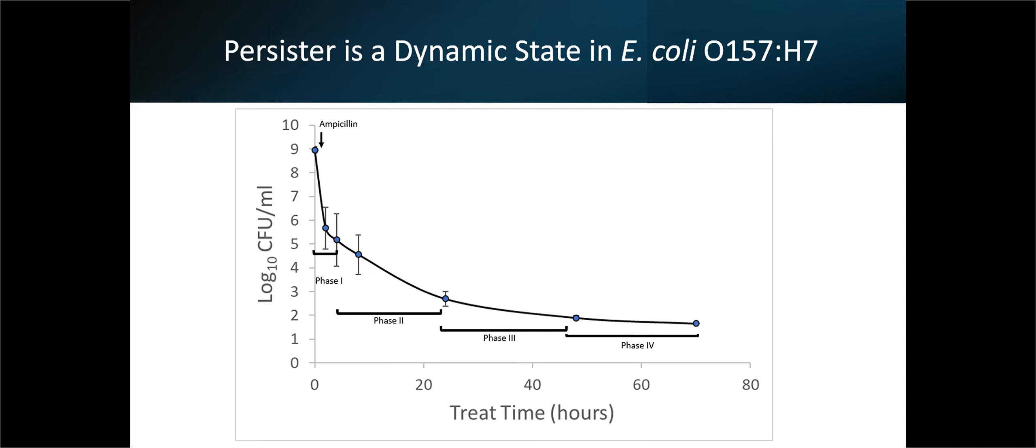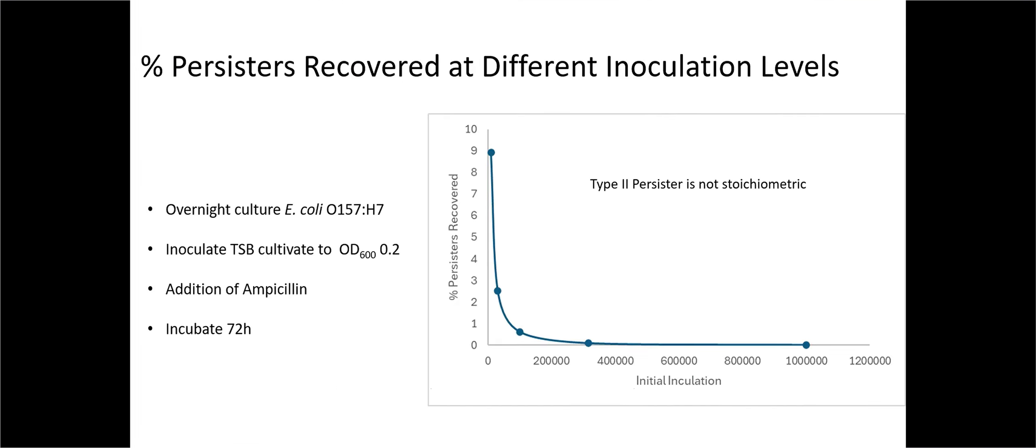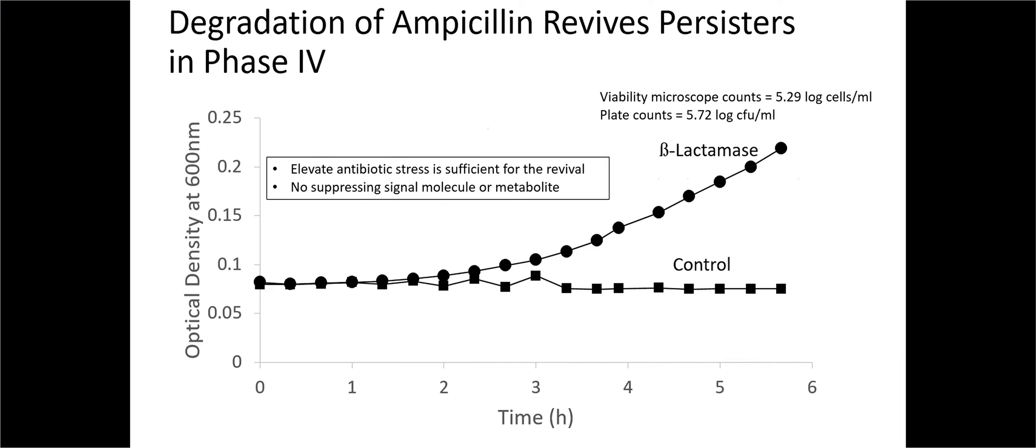Another interesting experiment is to do: is it spontaneous? It must be stoichiometric, i.e., proportional to the initial inoculation. When we looked at this, you would expect a straight line - the number of persisters is proportional to the initial inoculation. It doesn't work like that. The lower the actual inoculation level, the more persisters. That's interesting. It's a bit odd about the formation of persisters.